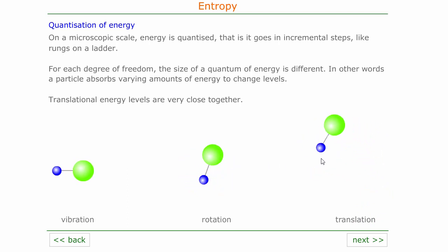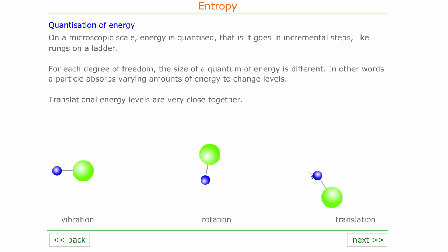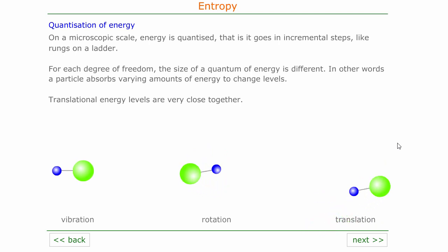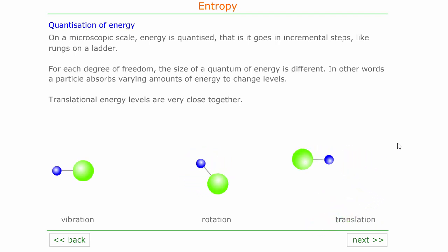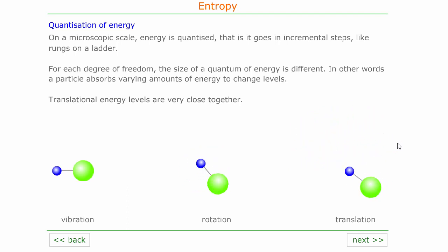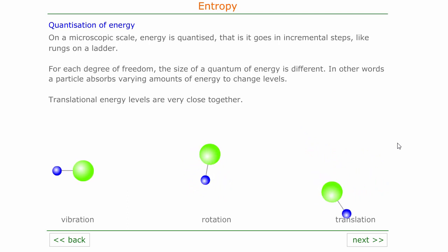Translation — which is moving from one place to another — has very small quanta of energy. So there are many, many, many tiny amounts of energy that can be absorbed to change the speed of particles as they fly around.